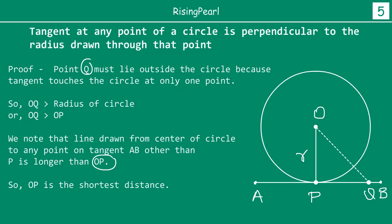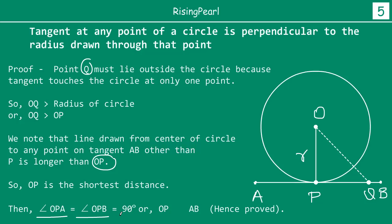Since OP is the shortest distance, angle OPA equals angle OPB, and both equal 90 degrees. Hence, OP is perpendicular to AB. So friends, this is how we prove that the tangent and the radius drawn at the point where the tangent touches the circle are always perpendicular to each other.